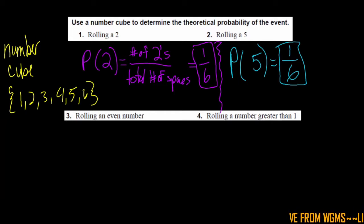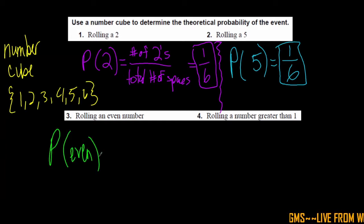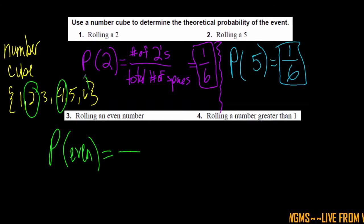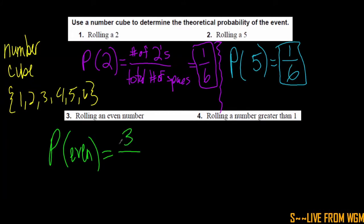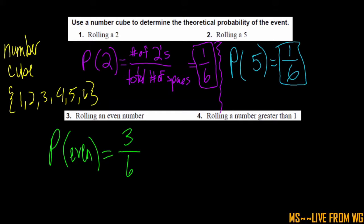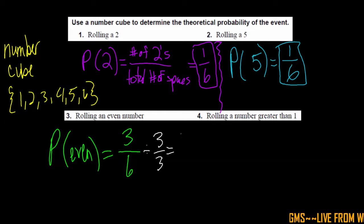Let's take it up a little bit. The event is rolling an even number. The probability of rolling an even number is the number of even numbers over the total number of spaces. I can circle and count how many even numbers I have — one, two, three even numbers. So the probability of rolling an even number is three over six. We simplify by dividing by the greatest common factor, dividing by three over three, and we get one half.